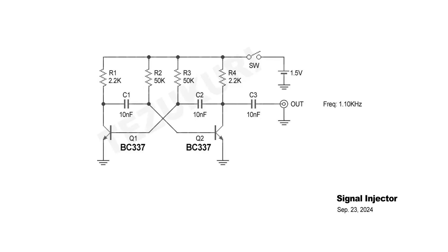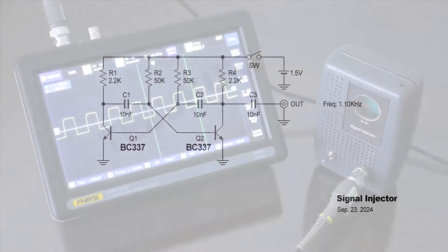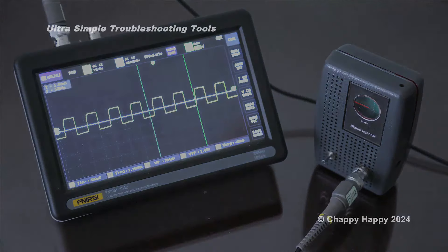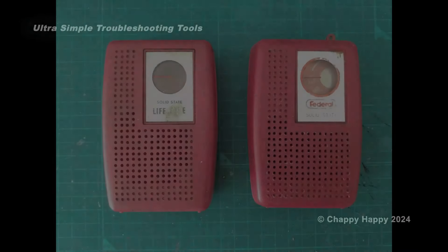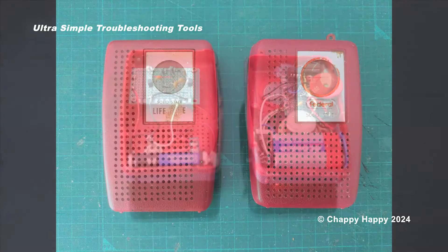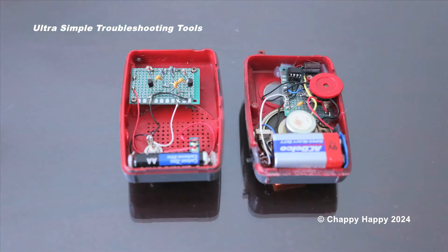This is a schematic diagram of the signal injector. It's a simple multivibrator circuit. I used the BC337. The output is a square wave of about 1.1 kHz. I assembled all the parts on the universal PCB and put it into the case of a non-working transistor radio.